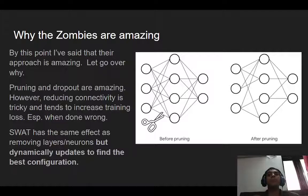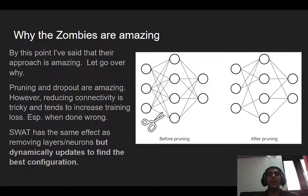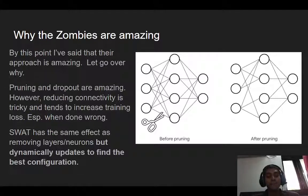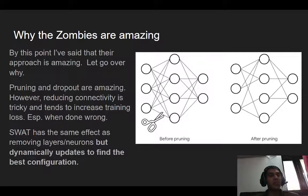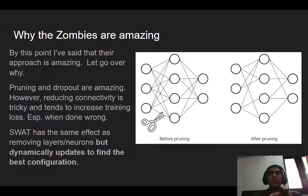Since we can update non-active weights, at every training run we might have a new possible configuration of active and non-active weights. This means we're able to traverse a much larger search space and test many more configurations. A lot of deep learning research suggests that what makes one method more effective than another is often how accurately and broadly it traverses the search space. In traditional pruning you're permanently killing parts of the network; with SWOT you're only knocking them out — they can come back. That's why zombie weights are so powerful.